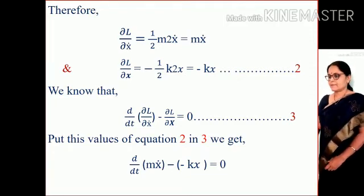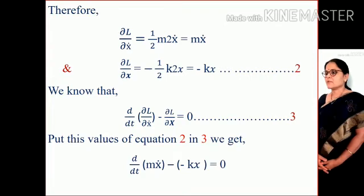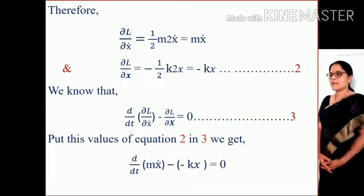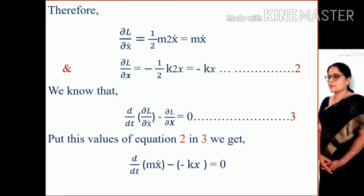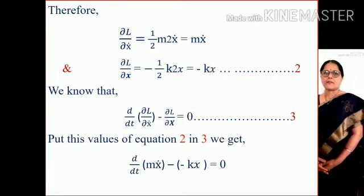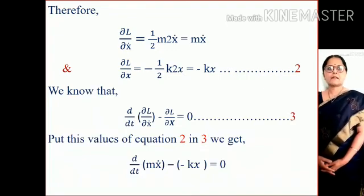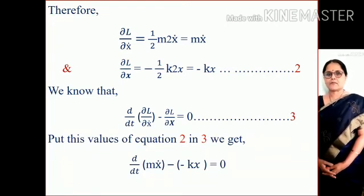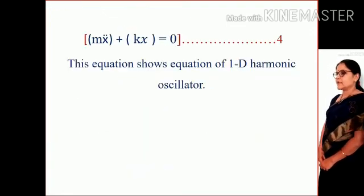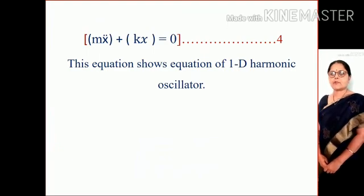We know that d/dt of (dL/d(x-dot)) minus dL/dx equals zero. Substituting these values, we get d/dt of (m x-dot) minus (minus kx) equals zero. The double negative gives plus, and d/dt of x-dot equals x-double-dot. Since m is constant, this becomes m x-double-dot plus kx equals 0.